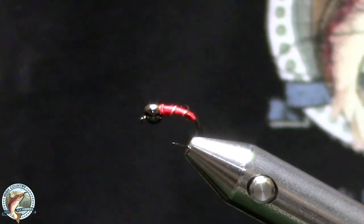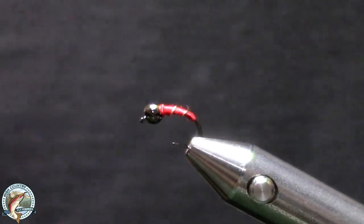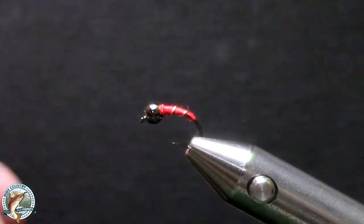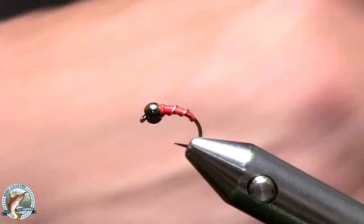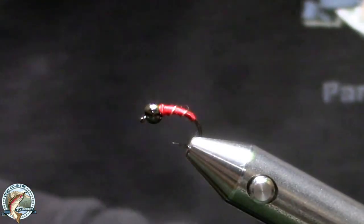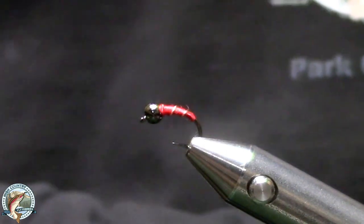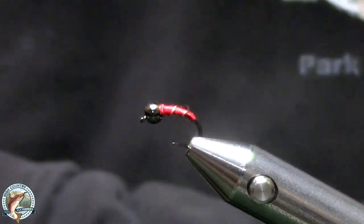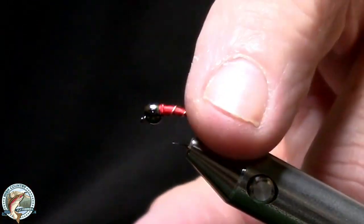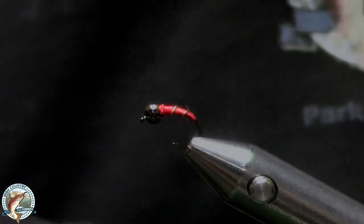What about wire sizes for zebra midges? Well, I use medium on this one. I like to have a little more pronounced rib, but you could use extra small, small, medium. It's just up to you. I like to have that rib pronounced a little bit more, so I used a little more.